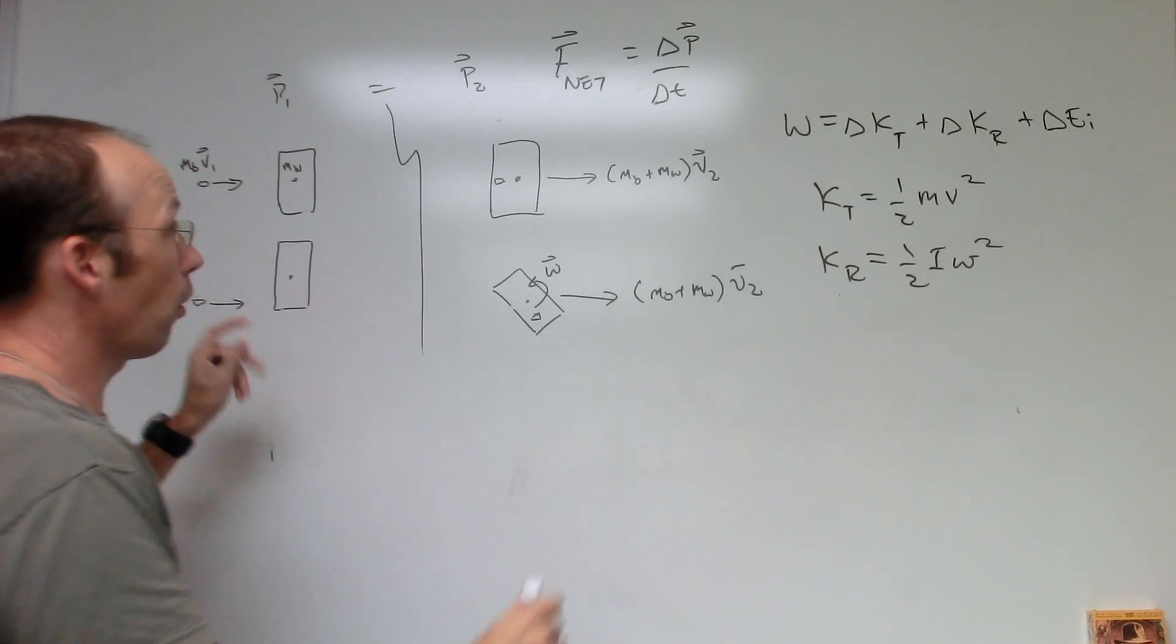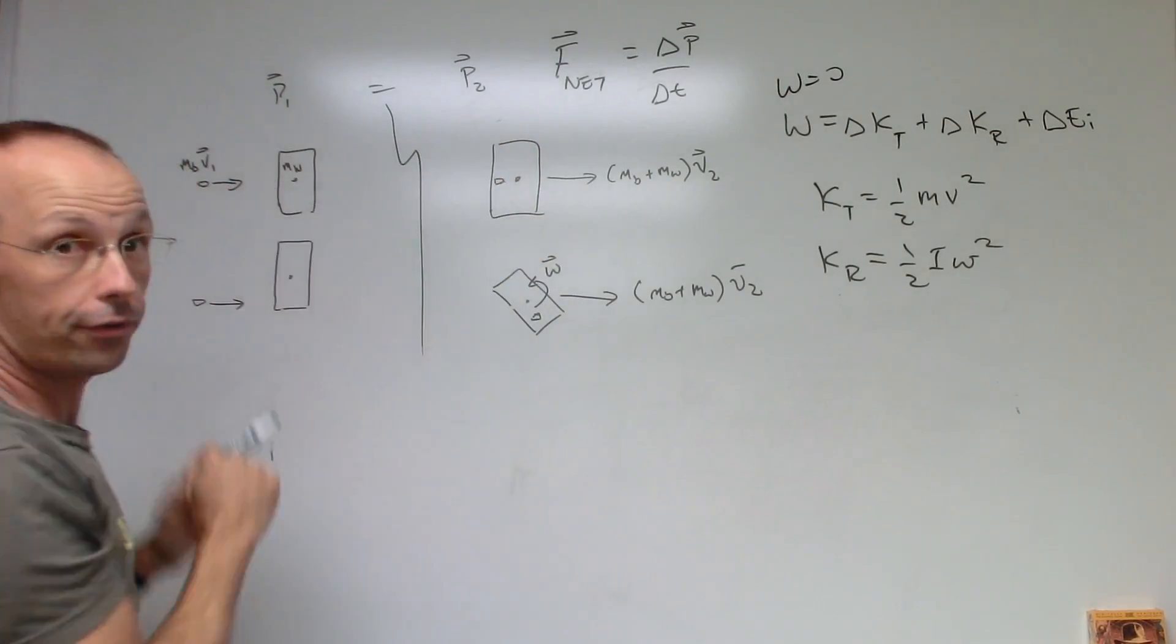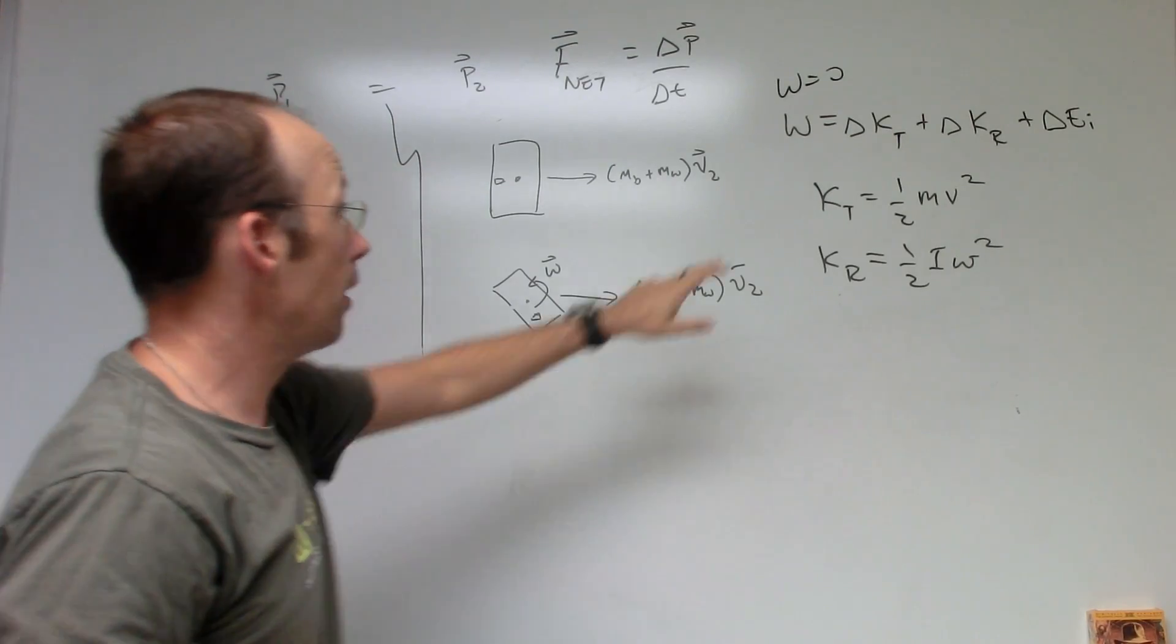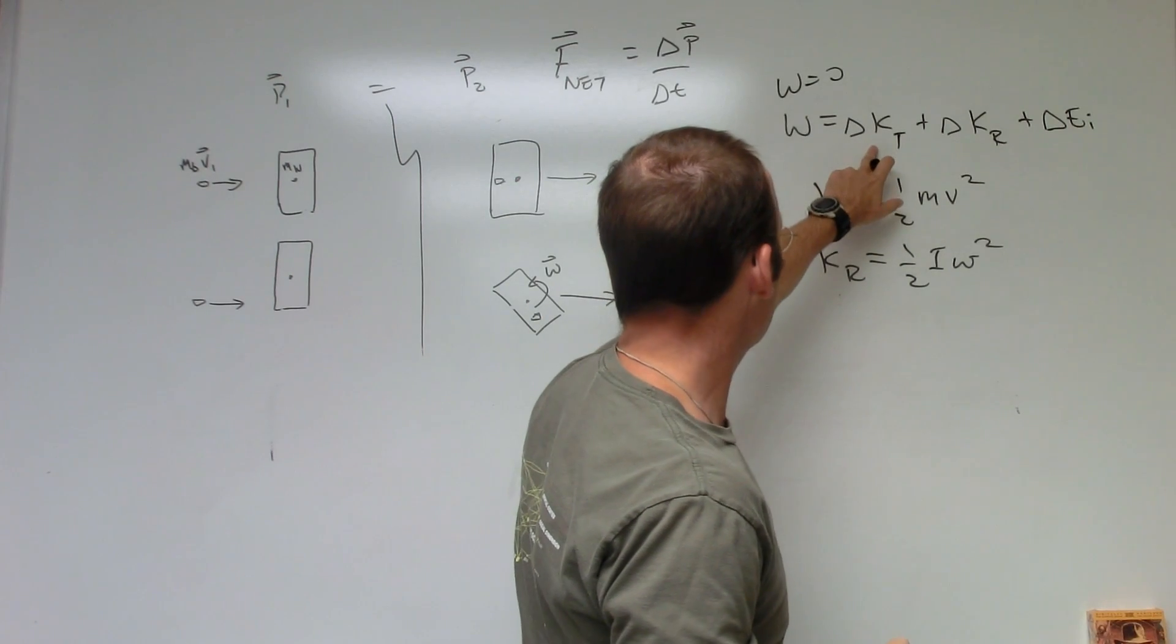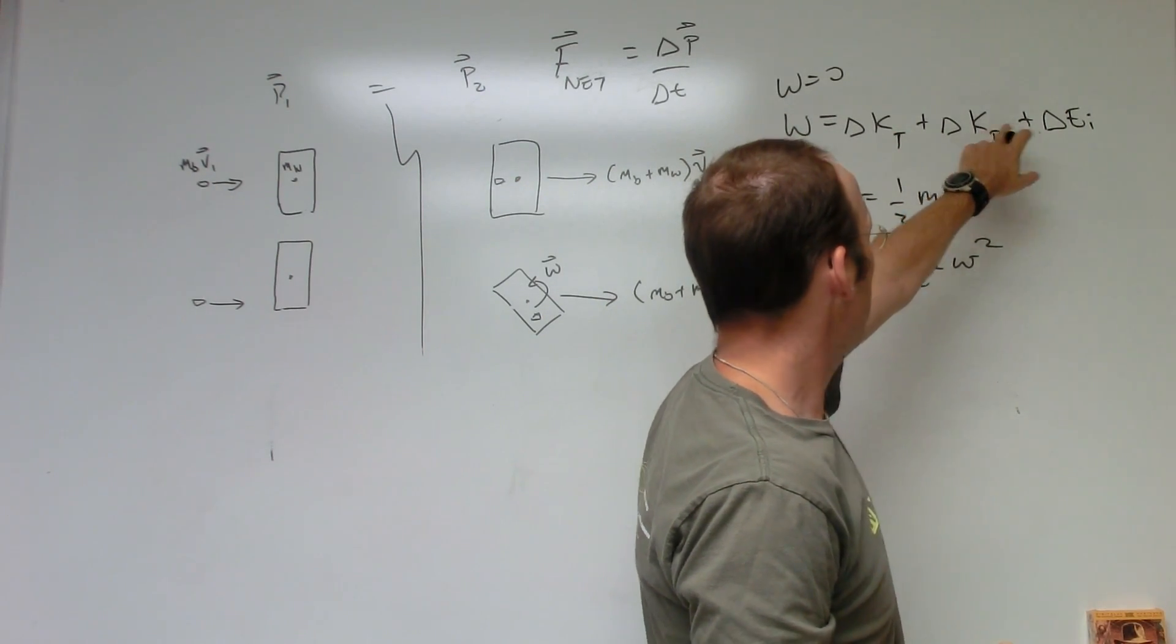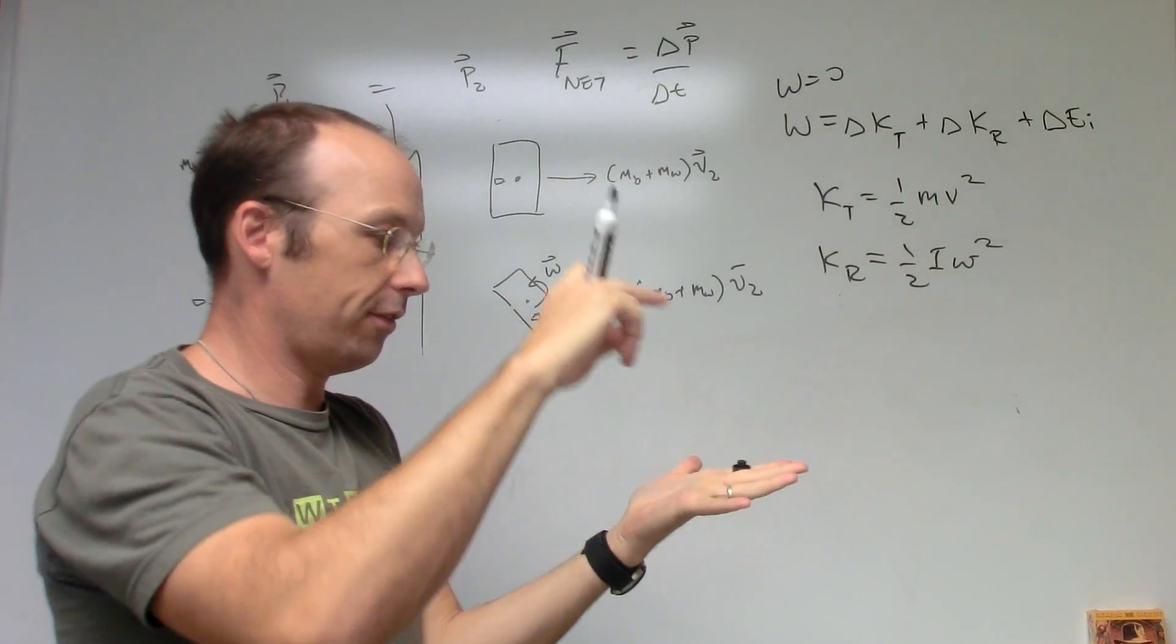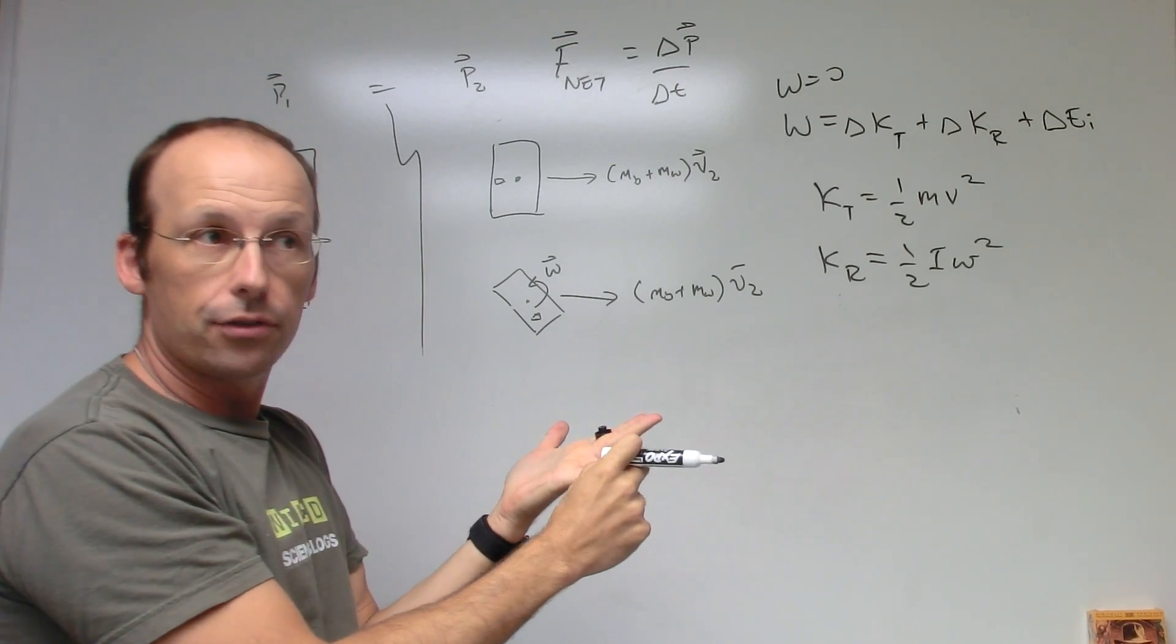So that means right here, for the first block, dead center block, change in kinetic translational, change in rotational energy, plus change in internal energy, which can be lots of things like the thermal energy, configuration energy. You know, you have to pull the block apart to get that bullet in there. That's in there.